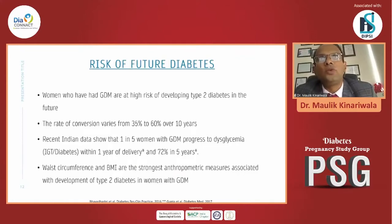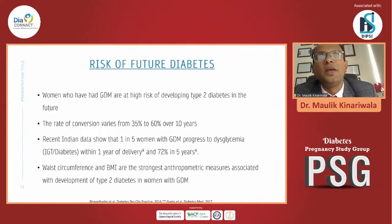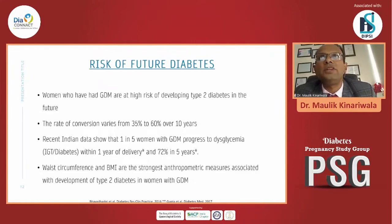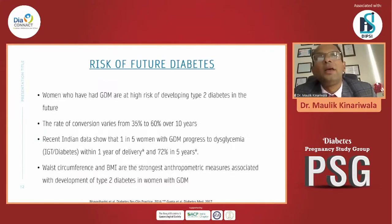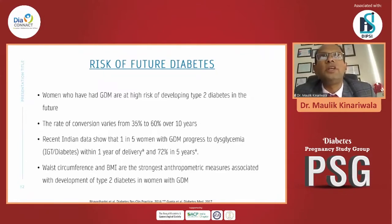Women who have had GDM are at higher risk of developing type 2 diabetes in the future. The conversion rate varies from 35 to 60 percent over a period of 10 years. Indian data shows that 1 in 5 women with GDM will progress to dysglycemia — in the form of IGT or diabetes — within one year of delivery, and there is a 70% risk within the next five years. Obesity, waist circumference, and BMI are the strongest predictive measures for developing type 2 diabetes in women with GDM.